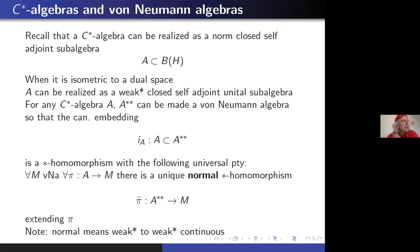I also remind you that 'normal' means — for a map between dual spaces in operator algebra theory — it is traditional to say it is normal when it is the adjoint of a map on the pre-dual, which is the same as saying that it is weak-star to weak-star continuous. So normal means it has a pre-adjoint.